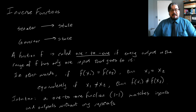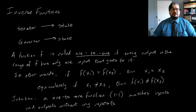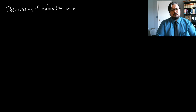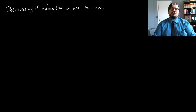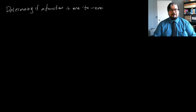Now, when we have a one-to-one function, there are quite a lot of things we can do with it, but before we get into that, we need to talk about how we can determine whether a function is one-to-one or not. It turns out that showing a function is one-to-one is harder than showing that a function is not one-to-one.